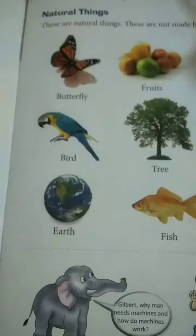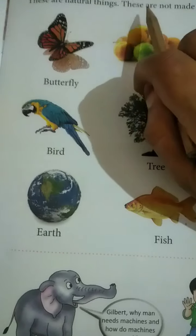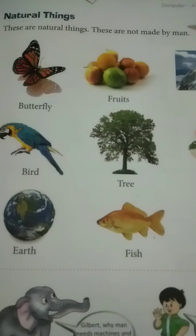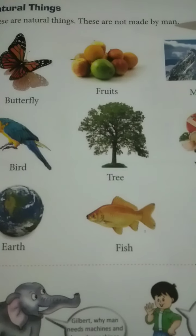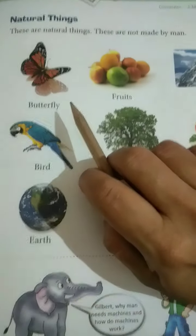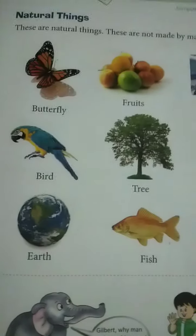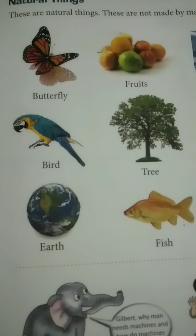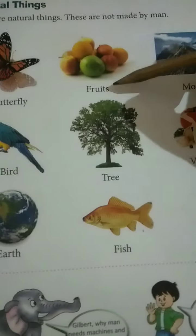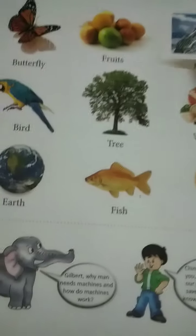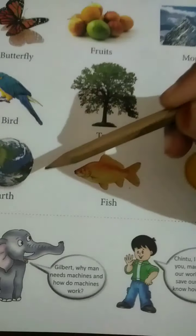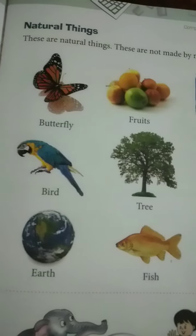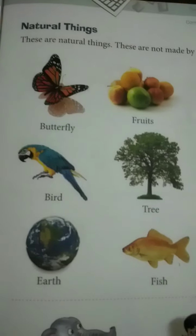Now, natural things. These are natural things — they are not made by man. Natural things are those which man cannot make. Can we make a butterfly? No, we can only draw its picture but cannot make it alive. So: butterfly, fruits, mountain, birds, trees, vegetables, earth, fish, sun — these all are natural things that man cannot make.